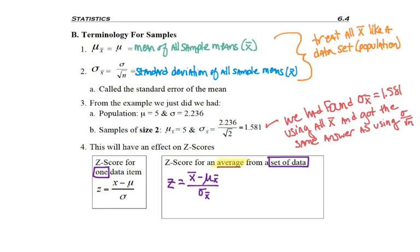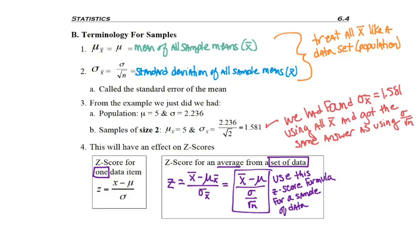But if you're finding the Z score for an average, you're going to put an average into that first spot. Number-wise, it might be hard to tell where it came from, but that's what the formula looks like. Since we know what mu sub X bar and sigma sub X bar equal, let's go ahead and convert those over. This is what we're going to use for our Z score formula for a sample mean of data.